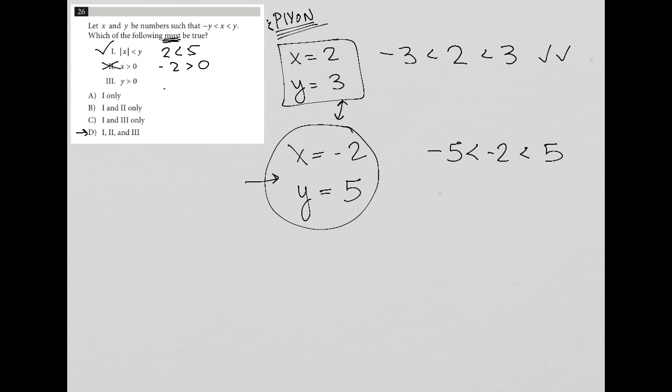And then for number three, Y is greater than zero. That's true. Five is greater than zero. So it looks like one and three worked both times. So I'm going to actually change my answer and say that C is the best answer for that reason.